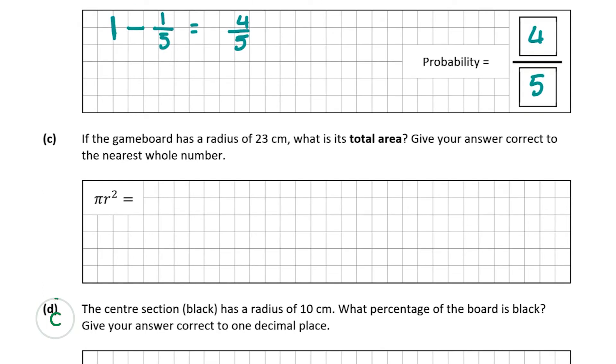Now let's move on to question C. The game board has a radius of 23 centimeters. What is the total area of the game board? Give your answer correct to the nearest whole number. It's given us the formula for the area of a circle. We're going to use πr² where the radius is 23, squared, and pop it straight into our calculator.